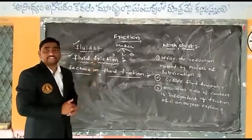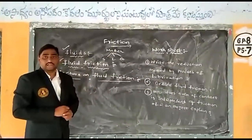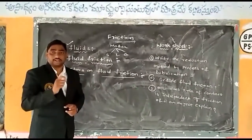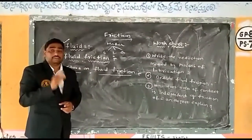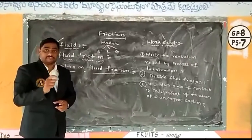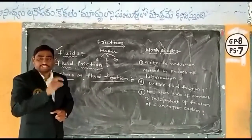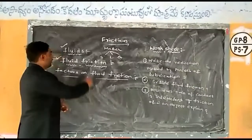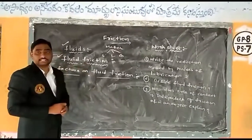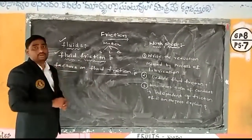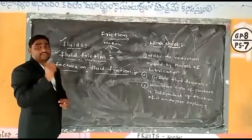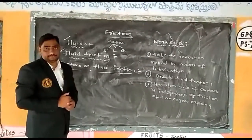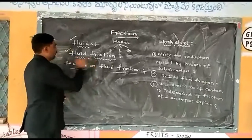What could be the reason behind this? The reason is fluid friction. Fluid friction takes place between the surface of the liquid layers in contact with the surface of the glass. This fluid friction is responsible for making the whirling motion of the water stop. So this is what is known as fluid friction.